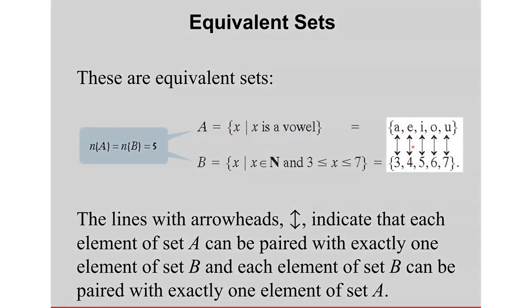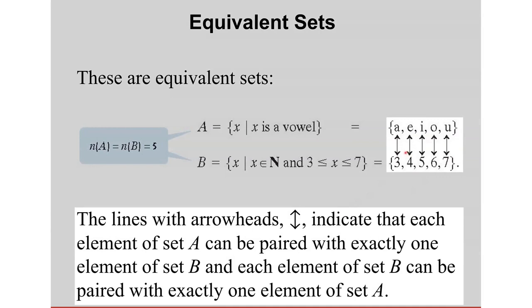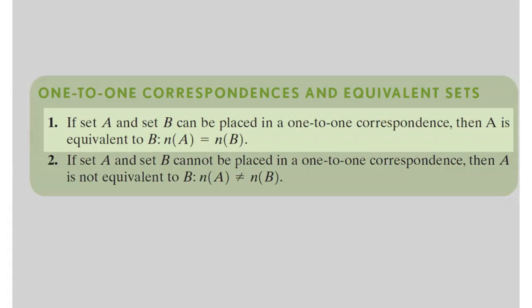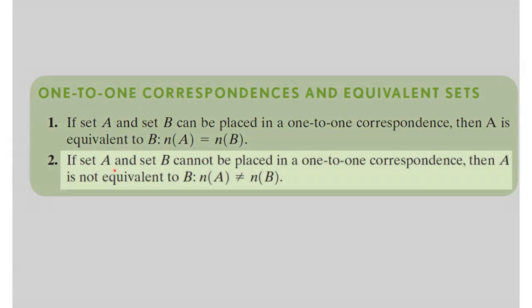These sets have a one-to-one correspondence. The arrows indicate that each element of set A can be paired with exactly one element of set B, and each element of set B can be paired with exactly one element of set A. If set A and set B can be placed in one-to-one correspondence, then A is equivalent to B. If they cannot, then A is not equivalent to B and their cardinalities are unequal.